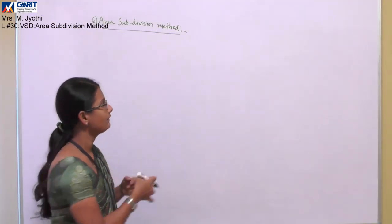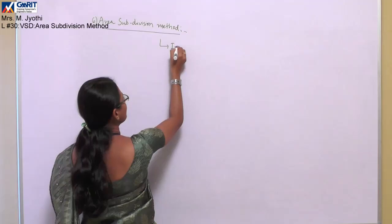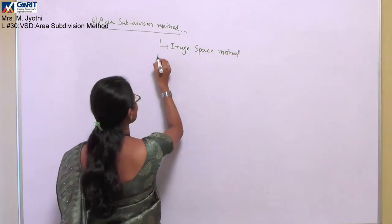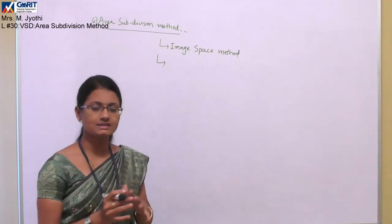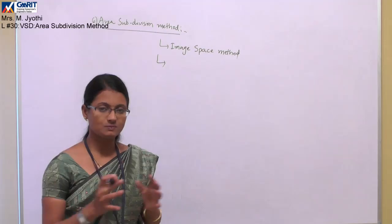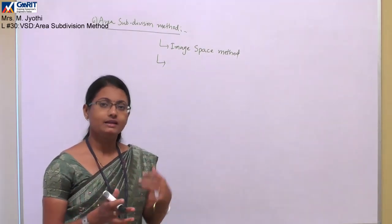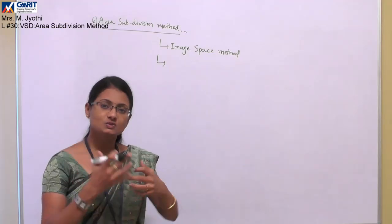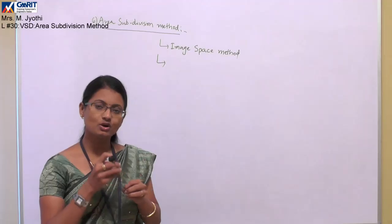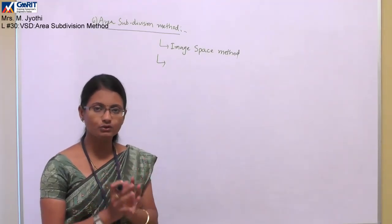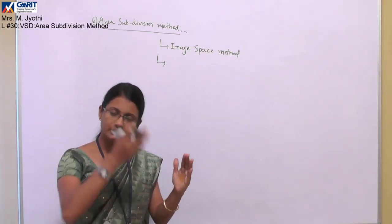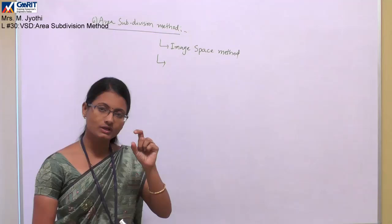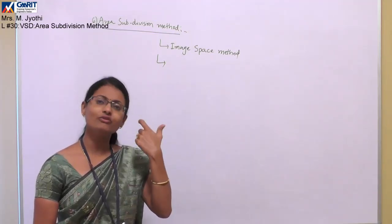Let us see what the area subdivision method is. It falls in the category of image space methods. In this method, similar to binary space partitioning, the space consisting of objects is considered as one space. In the area subdivision method, the complete space is divided into smaller and smaller areas until each area consists of a single surface or no surface at all.